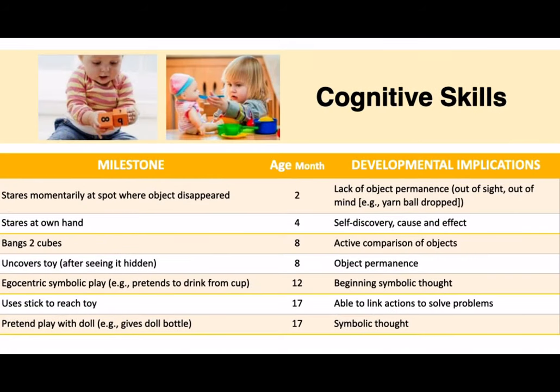In terms of cognitive skills: at two months they can stare momentarily at the spot where an object disappeared but lose interest quickly due to lack of object permanence; at four months they can stare at their own hands; at eight to nine months there is emergence of object permanence, they can bang two cubes and uncover toys after seeing them hidden; and at twelve months they begin egocentric symbolic play like pretending to drink from a cup.